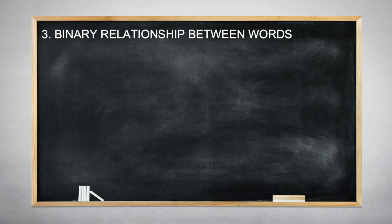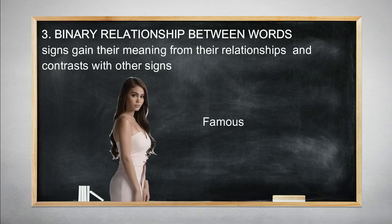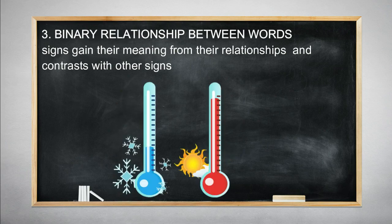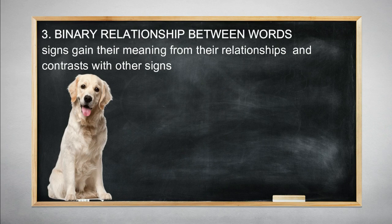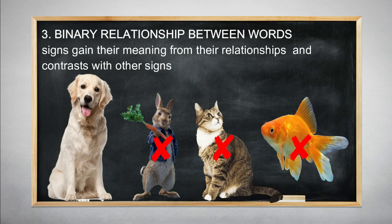Because different languages have different words to refer to things, signs gain their meaning from their relationship and contrasts with other signs. In other words, when we try to define things, we start with what they are not. For instance, Ivana Alawi is famous because she's not insignificant. We say it's cold because it's not hot. A dog is a dog because it's not a rabbit, not a cat, not a fish. So how do we define dog? We define dog by contrasting it to other things which it is not.